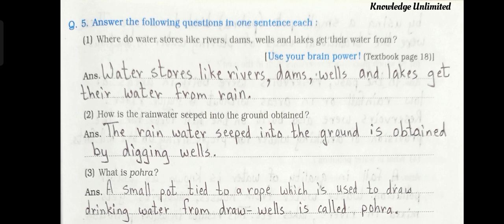Question five: answer the following questions in one sentence each. First, where do water stores like rivers, dams, wells and lakes get their water from? Answer: water stores like rivers, dams, wells and lakes get their water from rain. Question number two: how is the rainwater that seeped into the ground obtained?